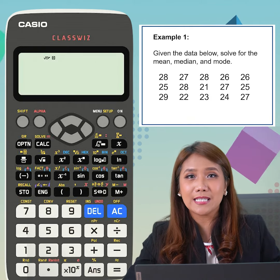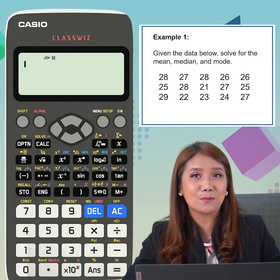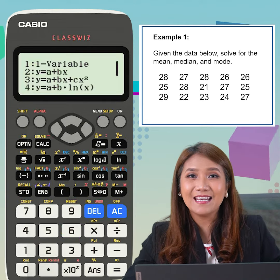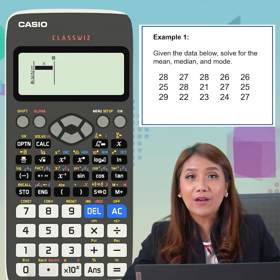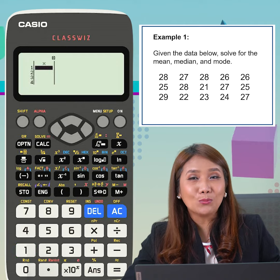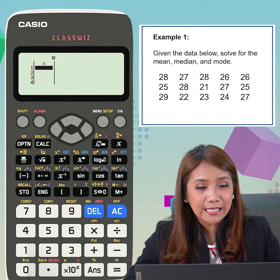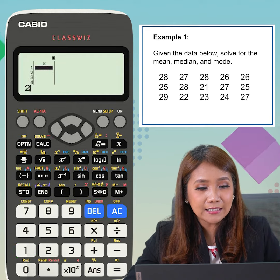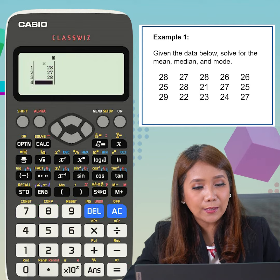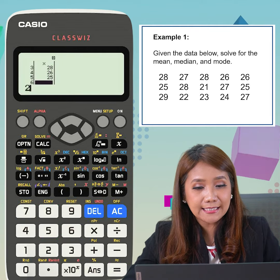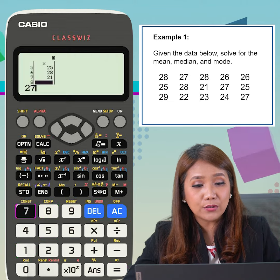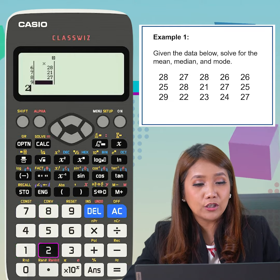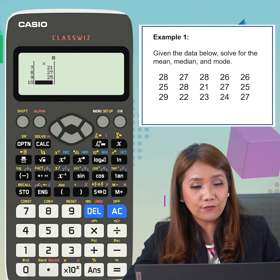First, let's go to Menu 6, statistics mode. Then, we click on one variable. Then, we key in all the values in the column with label X. So let's key in 28, 27, 28, 26, 25, 28, 21. Make sure as you encode the values, you click on the equal sign after each value.